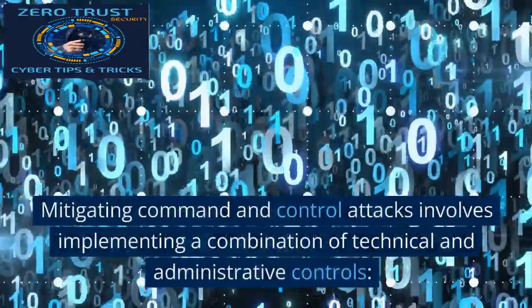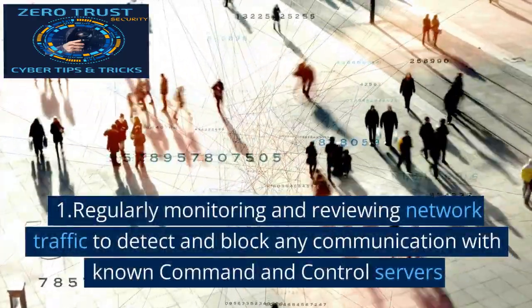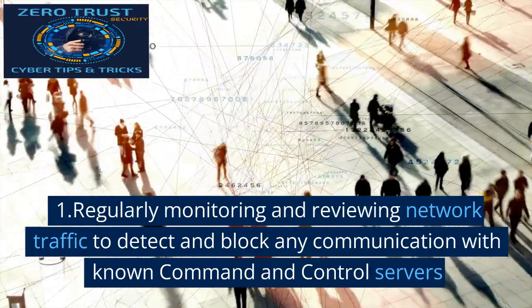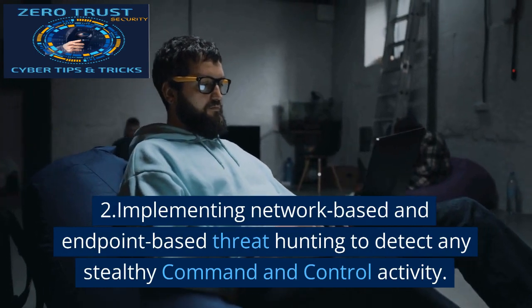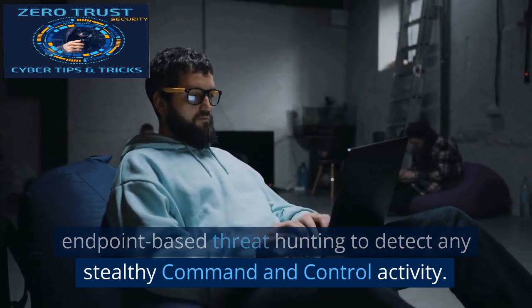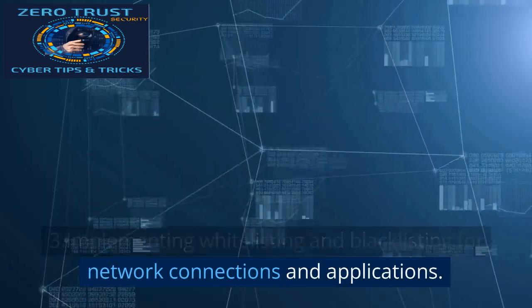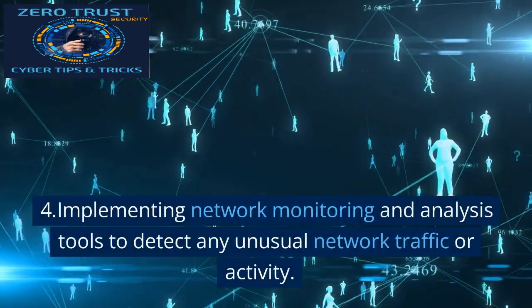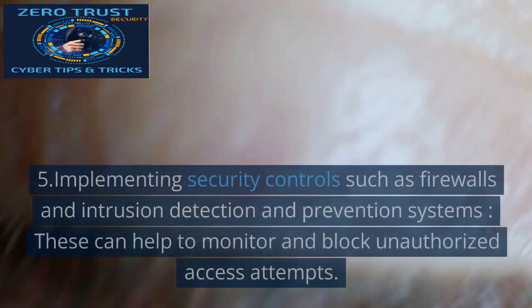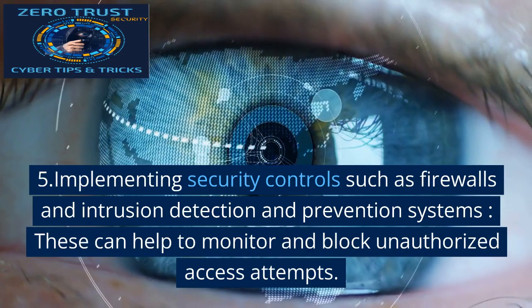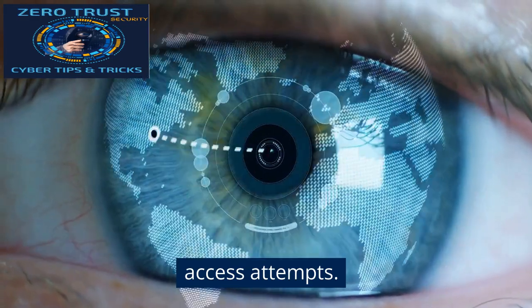Mitigating command and control attacks involves implementing a combination of technical and administrative controls. These include: (1) Regularly monitoring and reviewing network traffic to detect and block any communication with known command and control servers. (2) Implementing network-based and endpoint-based threat hunting to detect stealthy command and control activity. (3) Implementing whitelisting and blacklisting for network connections and applications. (4) Implementing network monitoring and analysis tools to detect unusual network traffic. (5) Implementing security controls such as firewalls and intrusion detection and prevention systems to monitor and block unauthorized access attempts.